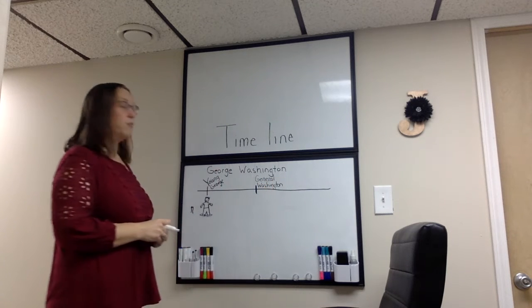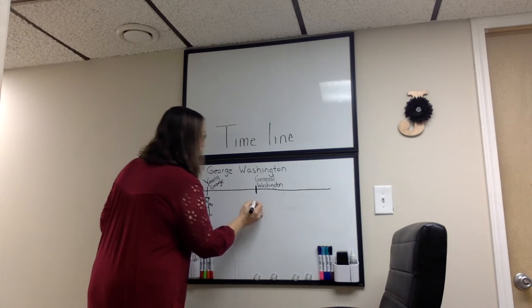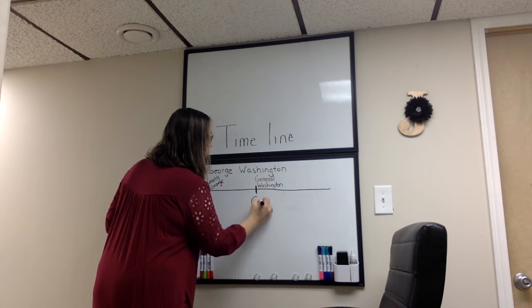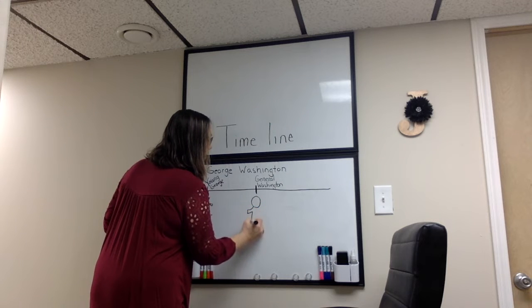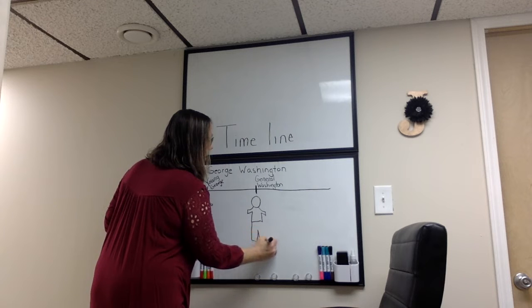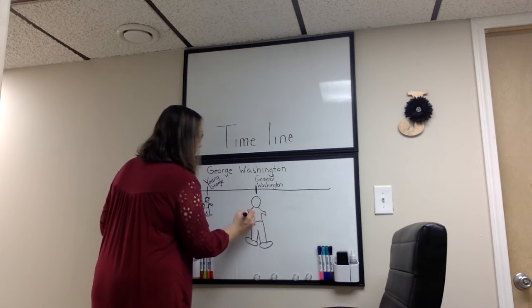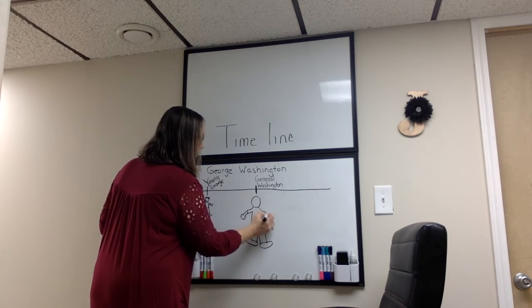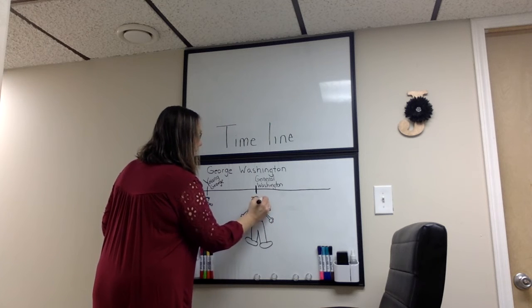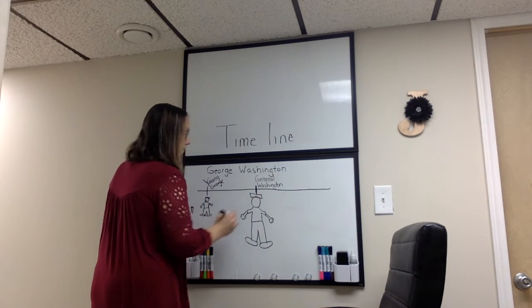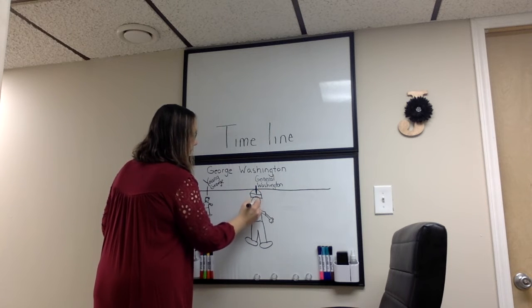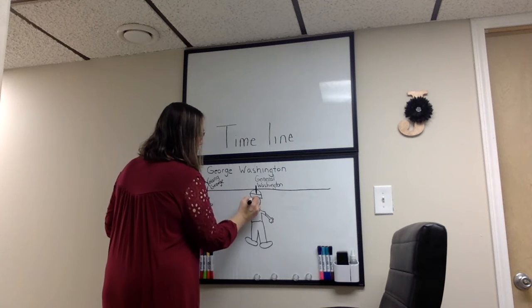At this time, George was an adult. So I'm going to draw another picture of George — this time it's going to represent him being a general. He led the Continental Army. I might make a hat on him to represent him in the army. His hair had gotten a little bit longer during this time.